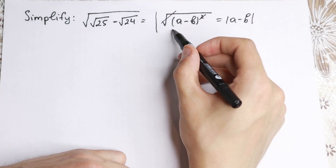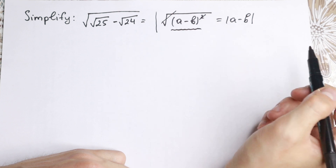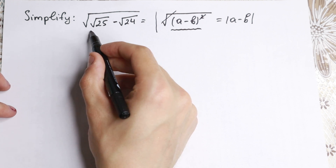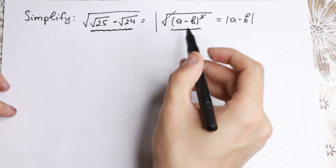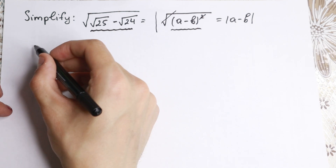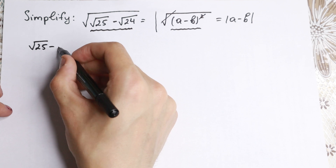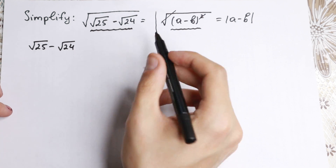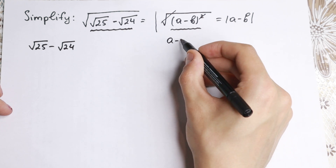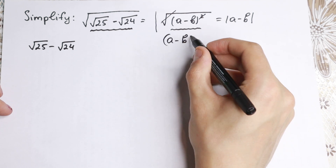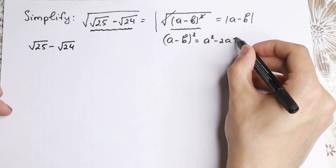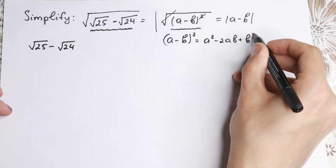The main thing we need to do is create a formula of the form (a minus b) squared, and let's see if that's possible in our case. If we can rewrite the expression square root of 25 minus square root of 24 as a perfect square, we can easily cancel our square root. Let's try with the classic formula: (a minus b) squared equals a squared minus 2ab plus b squared.